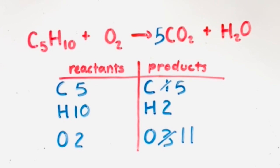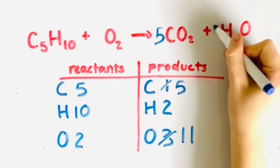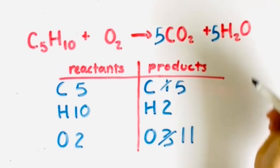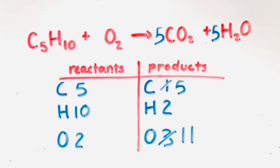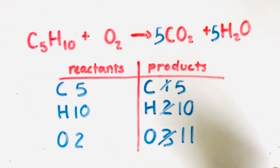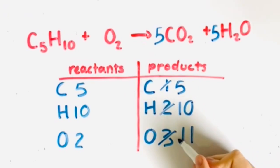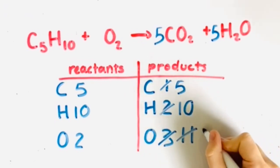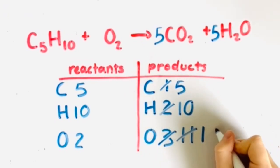Hydrogen only occurs in one compound on each side, so we will balance hydrogen next. Since there are 10 hydrogen atoms on the reactant side, we will put a five in front of the H2O compound, making the amount of hydrogen atoms 10 on the product side. This also changes the number of oxygen atoms in the H2O compound to five, making it a total of 15 oxygen atoms on the product side.